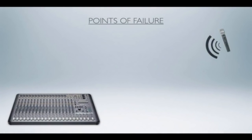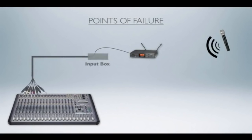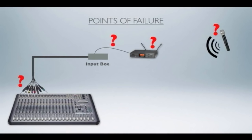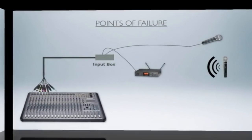Let's look at a wireless microphone. This is pretty similar to the wired microphone scenario, with the added steps of the transmitter in the microphone and the wireless receiver. In addition to checking all the connections, we have to check whether the mic signal is making its way through the air to the receiver. Is the mic okay? Is it on? Is the receiver on and working? Are they communicating? Is the receiver connected to the input box, and the other end of the snake to the mixer input channel?